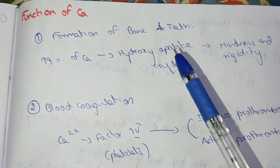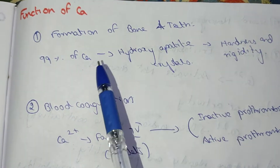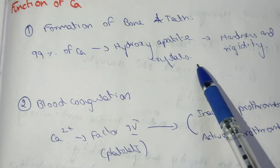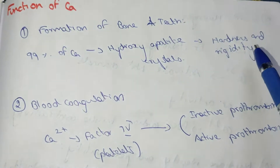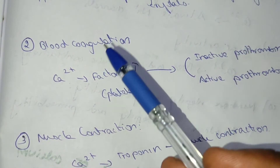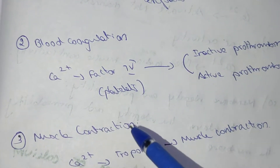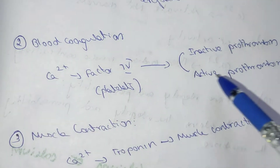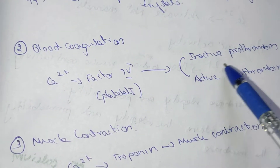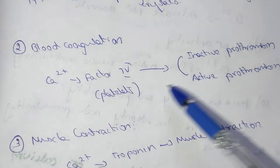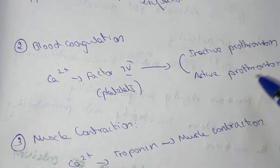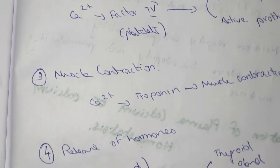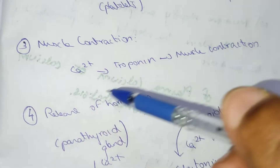The functions of calcium include: formation of bone and teeth — 99 percent of calcium is used as hydroxyapatite crystals, which increase hardness and rigidity. In blood coagulation, calcium (factor four) activates prothrombin, making it essential in the coagulation process.